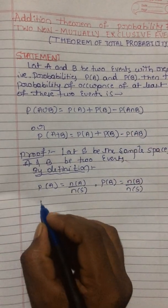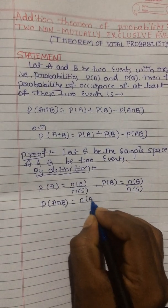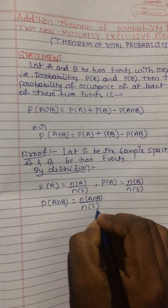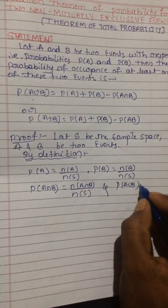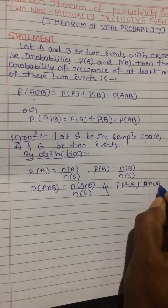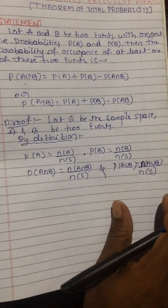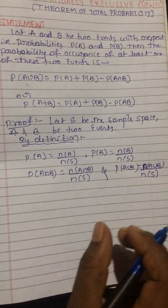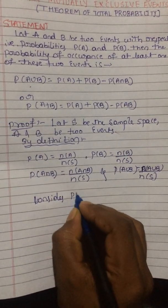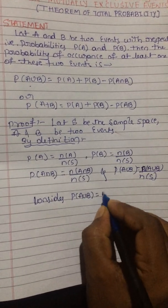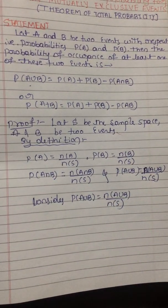By definition, P(A∩B) = N(A∩B) / N(S), and P(A∪B) = N(A∪B) / N(S). We know from set theory that the number of elements in a union can be expressed as: N(A∪B) = N(A) + N(B) - N(A∩B).